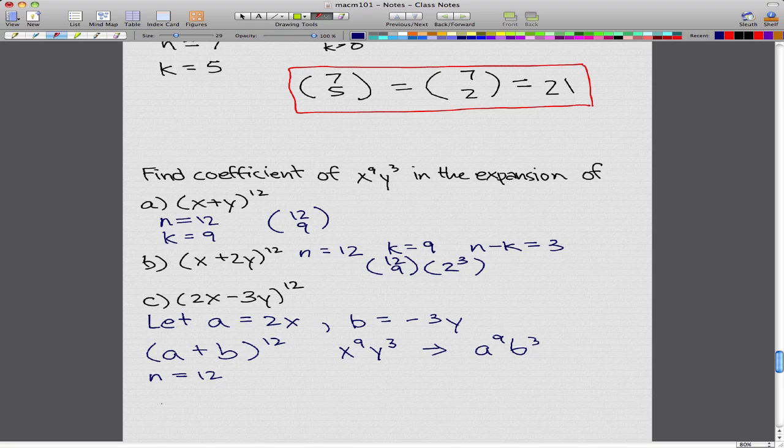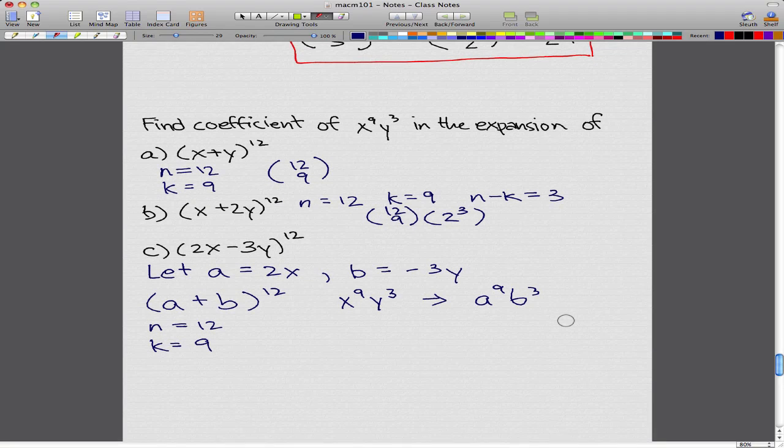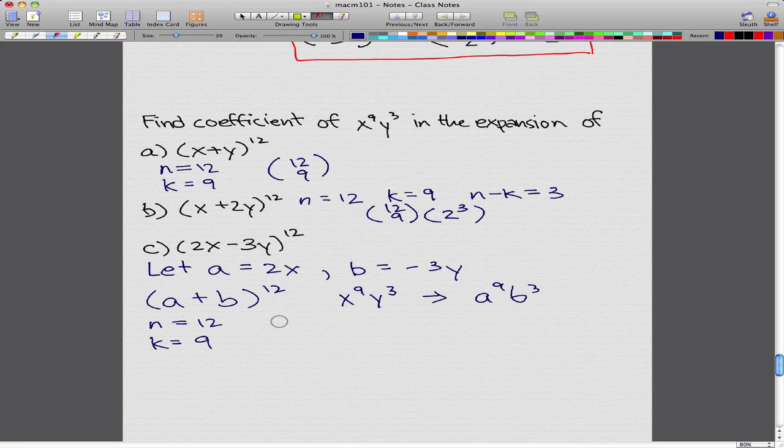And we're looking for n choose k, right? So our k would be equal to 9, just like before. Nothing there has really changed. So doing that, we get 12 choose 9. But then we also have these a's and b's.